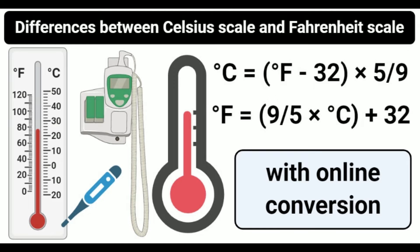Initially, the Celsius scale used 0°C for the boiling point of water and 100°C for the melting point of ice, but the scale was later reinverted in the form that is used today. In this scale, the lower fixed point is considered 0°C, and the upper fixed point is considered 100°C.